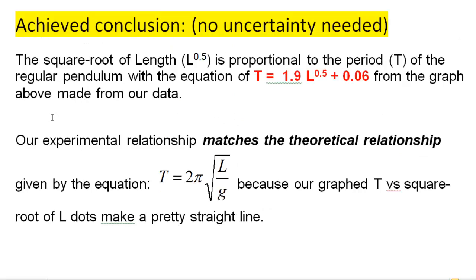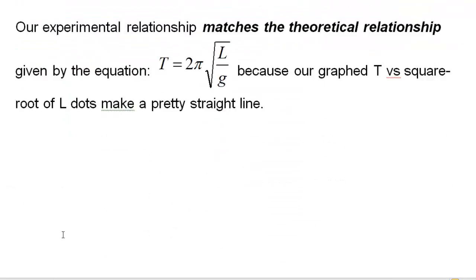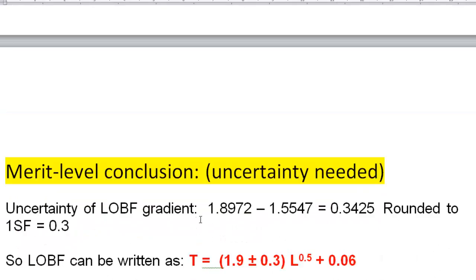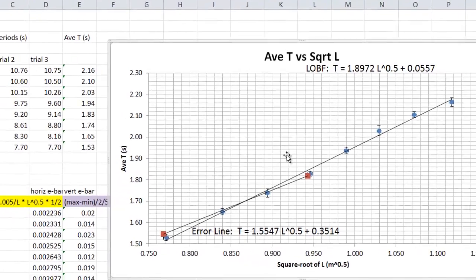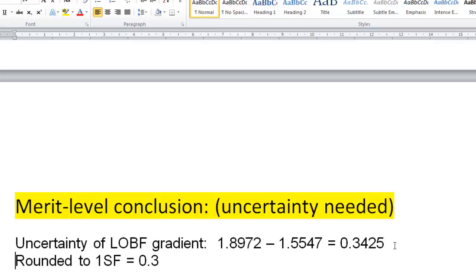Now, here we go. For merit, back to these instructions. For merit, we need to include some uncertainties. What we do is we use the two gradients of this graph. The two gradients of this graph. We subtract them, and we end up with an uncertainty for our gradient in our line of best fit. So you just subtract them. You don't care which is larger or smaller. You just want the difference. The vast majority of people in the world round this off to one significant figure. So instead of 0.34, you just round it off to 0.3.